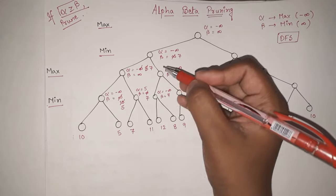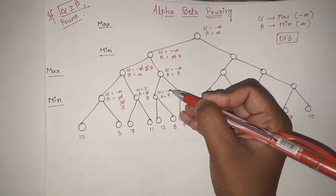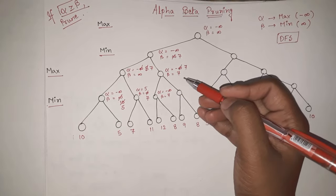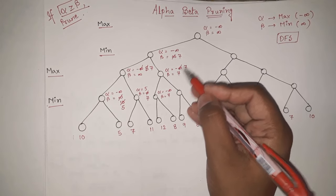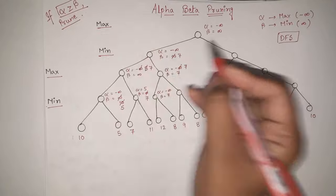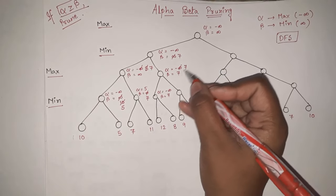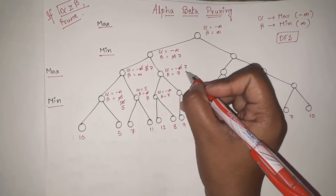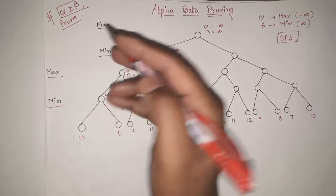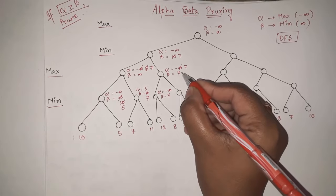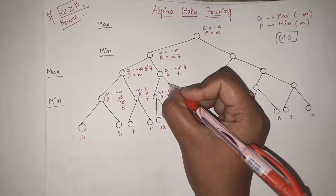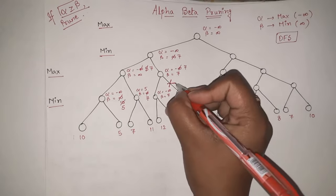We go back up. This is a max level, so alpha is updated. Out of minus infinity, minus infinity, and 7, the maximum is 7 — so alpha is updated to 7. Now here alpha equals 7 and beta equals 7. At every node we check the condition. In this case, alpha greater than or equal to beta is true because both are 7 — equal. So this condition is correct and we prune the further branch. One pruning is done here.